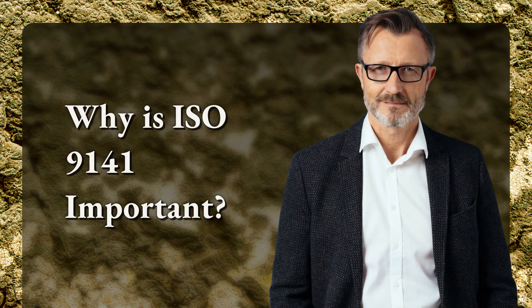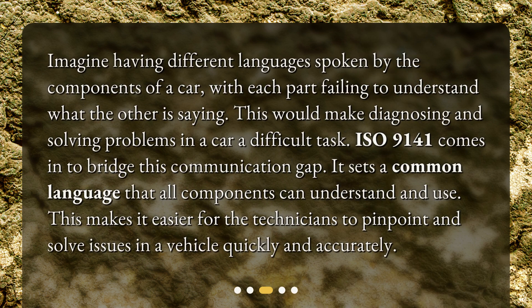Why is ISO 9141 important? Imagine having different languages spoken by the components of a car, with each part failing to understand what the other is saying. This would make diagnosing and solving problems in a car a difficult task. ISO 9141 comes in to bridge this communication gap. It sets a common language that all components can understand and use, making it easier for technicians to pinpoint and solve issues in a vehicle quickly and accurately.